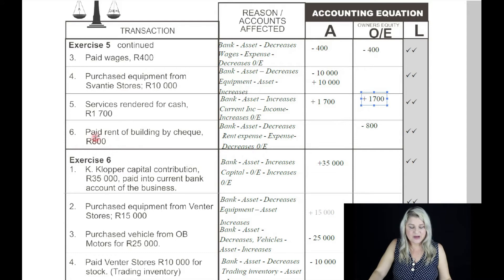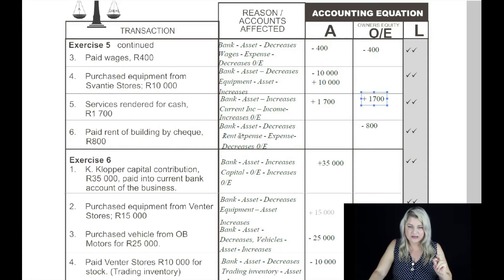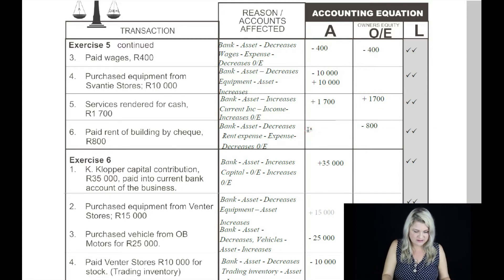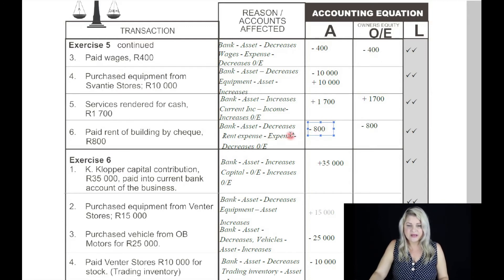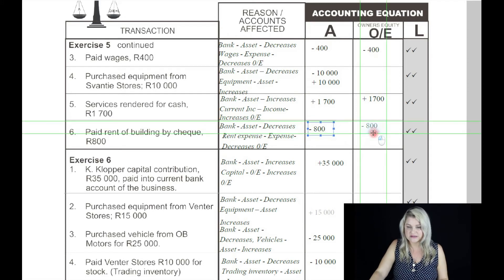On the sixth: paid rent of a building by cheque, 800 Rand. The two accounts affected are bank and rent expense. Bank is an asset — what is happening to the asset? We're paying something out, so it decreases by 800 Rand. The other account is rent expense, and an expense always decreases owner's equity.